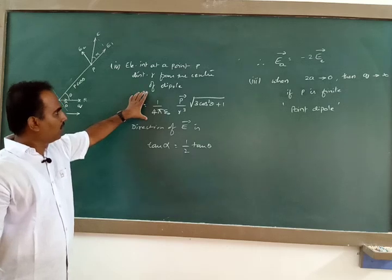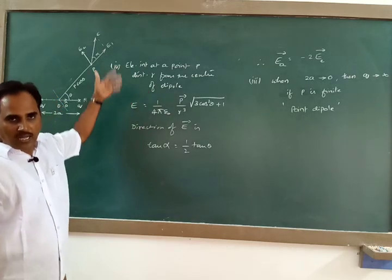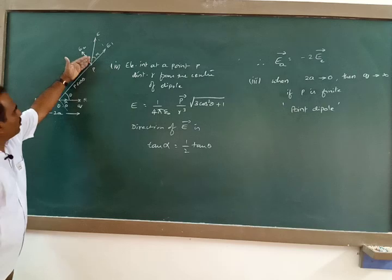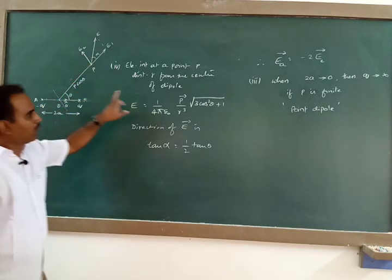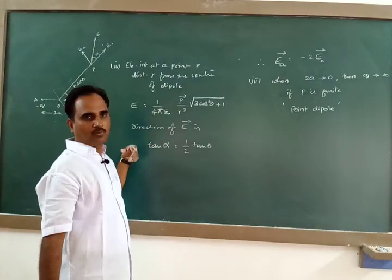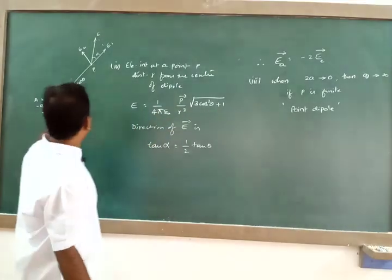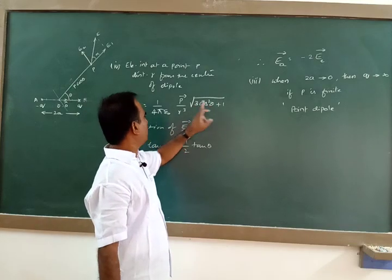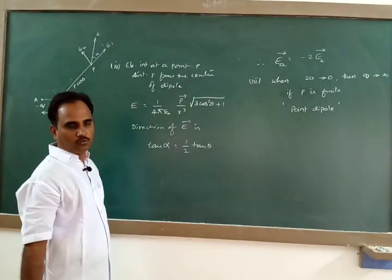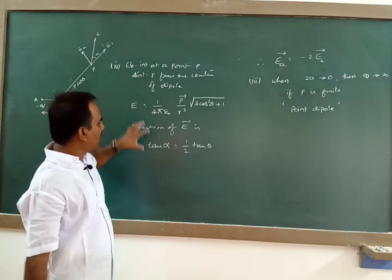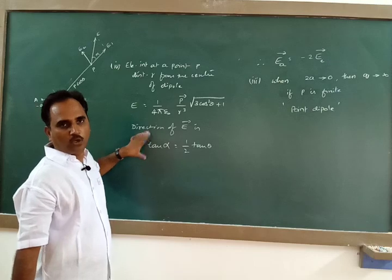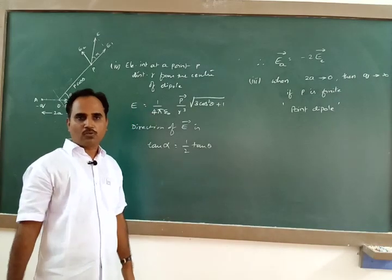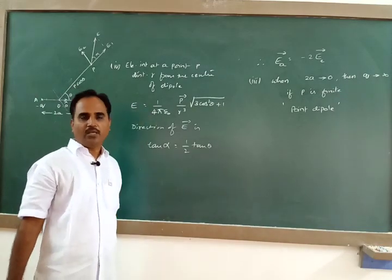From this general equation you can verify the earlier two results. If θ = 0, point P is on the axis; cos 0 = 1, so E = (1/4πε₀) × 2P / r³, which is the field on the axis. If θ = 90°, cos 90° = 0, so E = (1/4πε₀) × P / r³, which is the field on the equatorial line. Practice these two derivations, remember these points, and we shall continue from here in the next class.